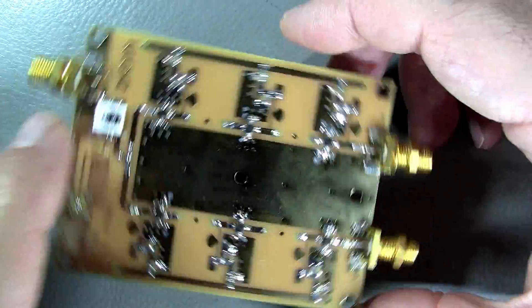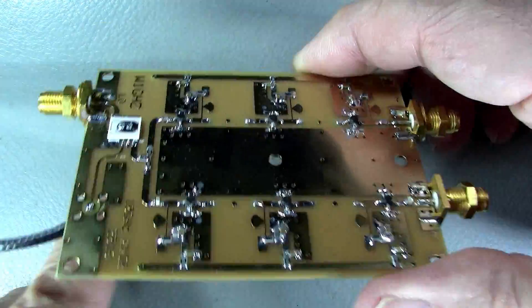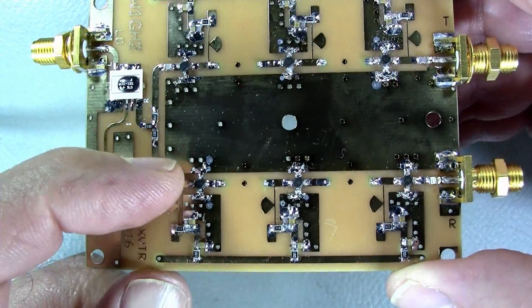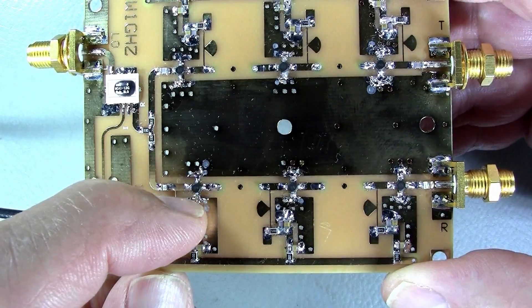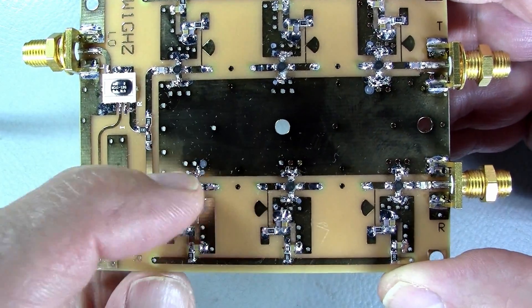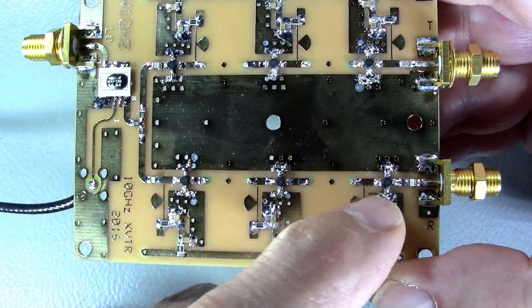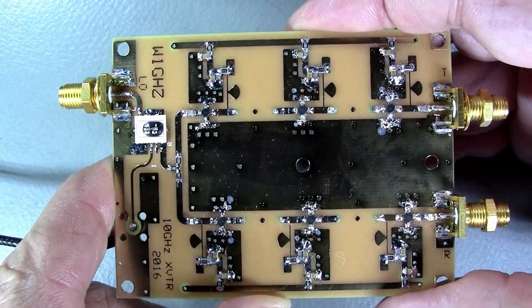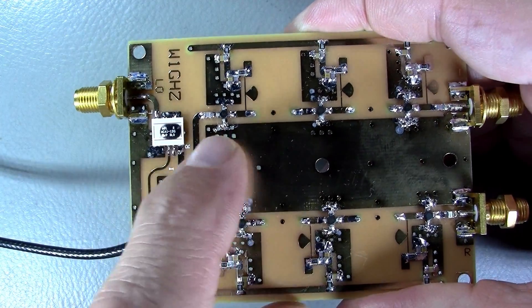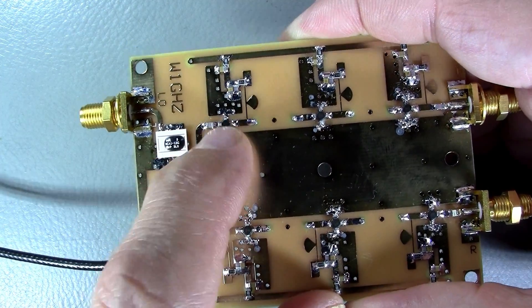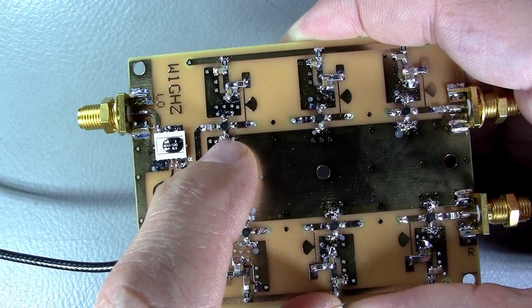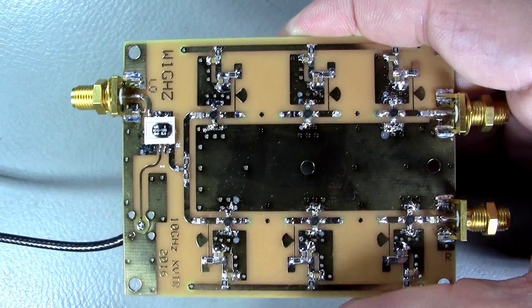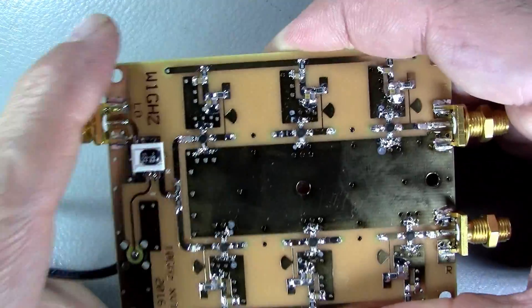I started to assemble the surface mount components. That went well, though it's always difficult to solder the MMIC amplifier ground leads to the ground plane. Even with a powerful 120 watt soldering iron, you need to put flux there and move your tip a lot to flow the solder. It looks ugly in the end but it is soldered down no problem.